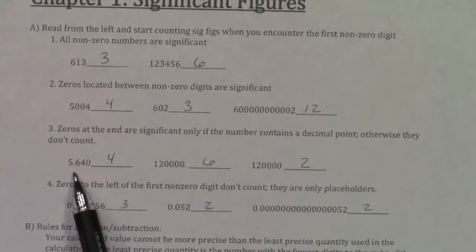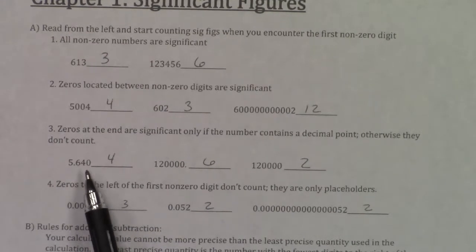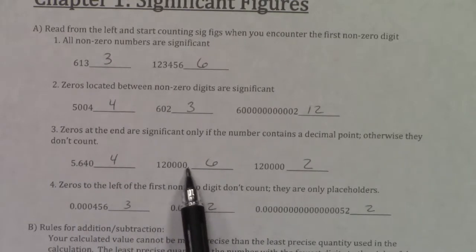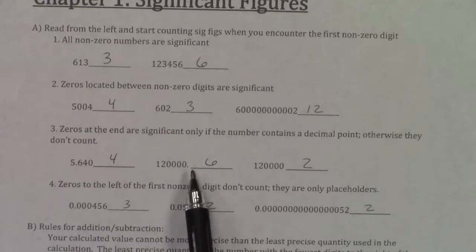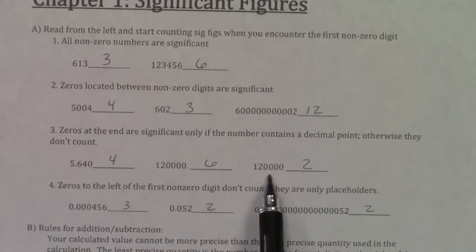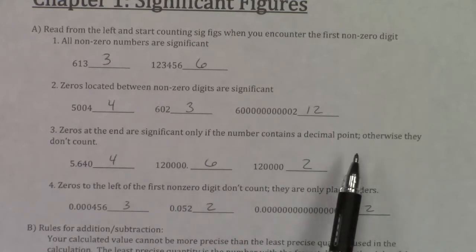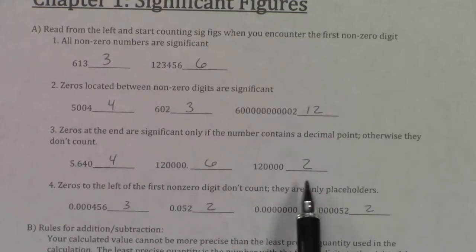So this 5.640, that zero is significant because there's a decimal. This 120,000, those zeros are significant because it has a decimal. But this 120,000 doesn't. Zeros at the end are significant if and only if there's a decimal point, and that's why that has 2.